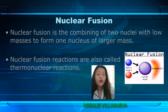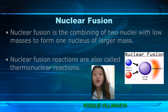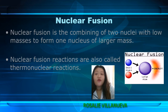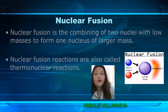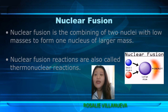Nuclear fusion is the combining of two nuclei with low masses to form one nucleus of larger mass. It is the nuclear process where energy is produced by smashing together light atoms.